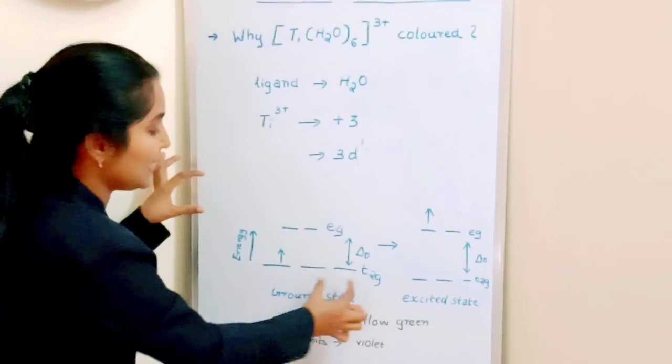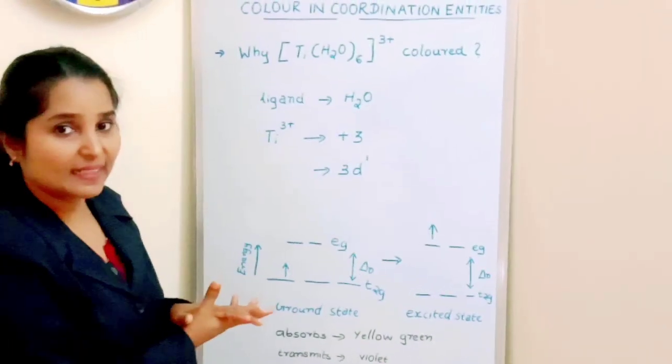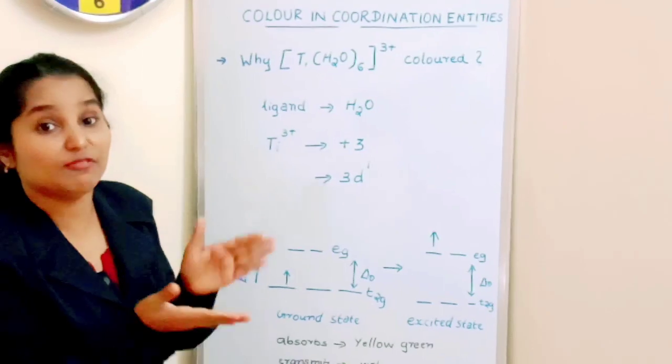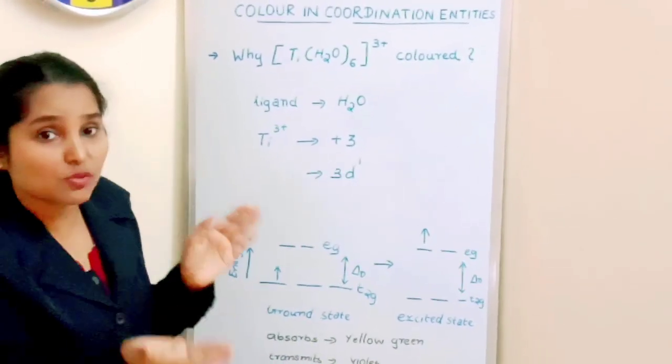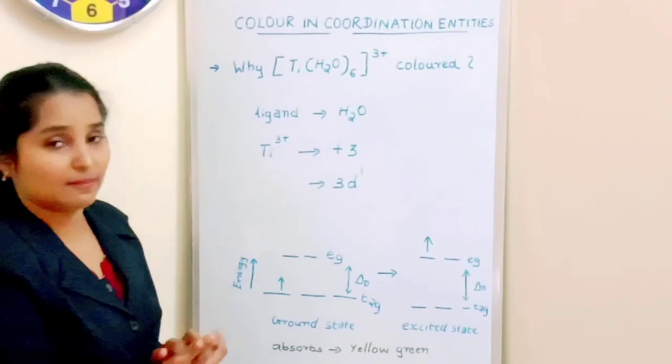That unpaired electron, since it is an octahedral complex, after approach of the ligand and formation of the coordination entity, will undergo crystal field splitting and form two sets of orbitals: T2G orbitals and EG set of orbitals.